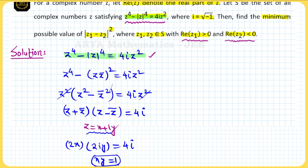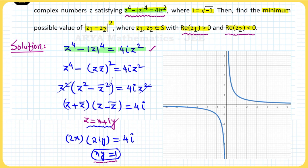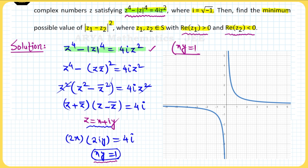Now, xy = 1 is the equation of a rectangular hyperbola, and this will be the graph of that hyperbola. All complex numbers z satisfying the original complex equation lie on the locus xy = 1.